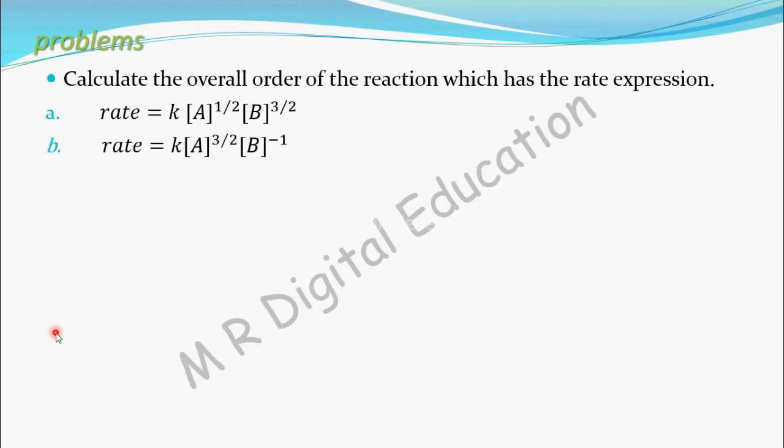B: Rate equal to K into concentration of A to the power 3 by 2 into concentration of B to the power minus 1.